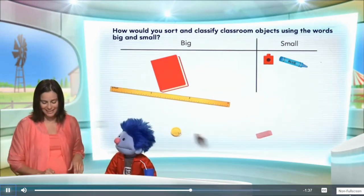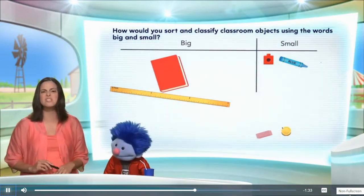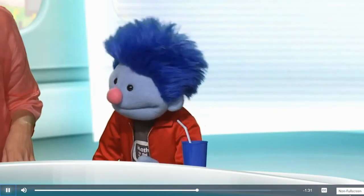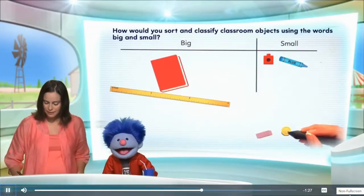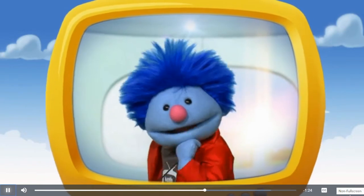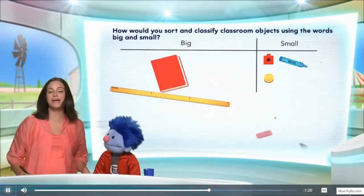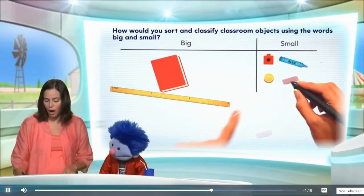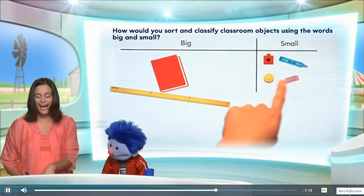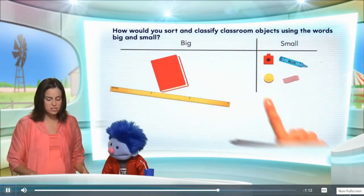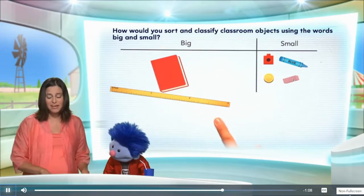We have two more objects — the counter and the eraser. What do you think? Are these small or are these big? Well, they look more like the small items to me. I agree. These are all small objects. So we have our connecting cube, our crayon, our counter, and our eraser in the small category. And the book and the yardstick in the big category.